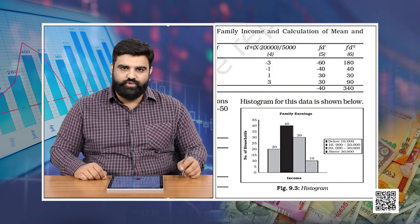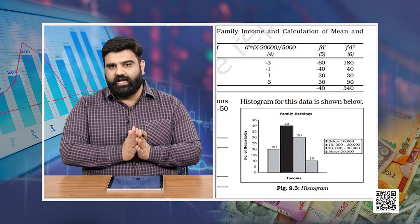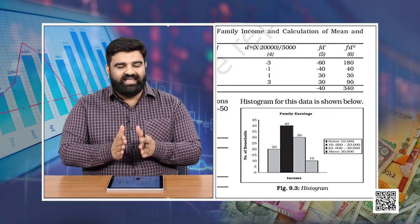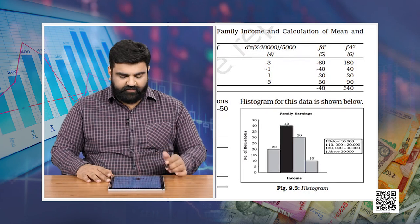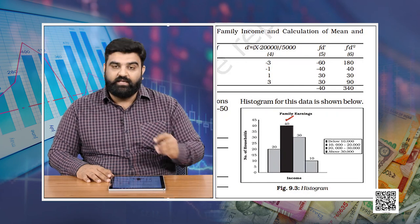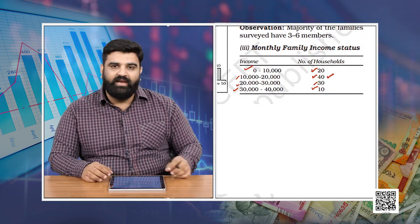Let's show the monthly income information in the form of a histogram. Histograms are basically bar diagrams but without any gap — they are two-dimensional diagrams because both length and width matter. The histogram shows that the tallest bar, with 40 families, belongs to the 10,000 to 20,000 monthly income group, which can also be confirmed from the table.